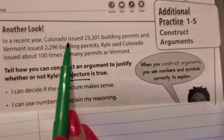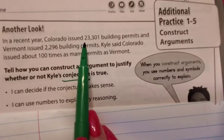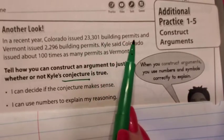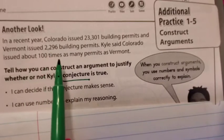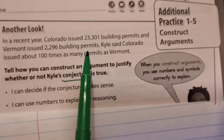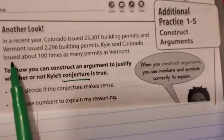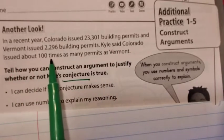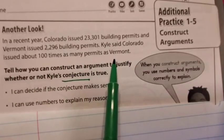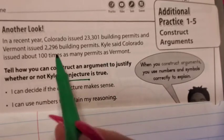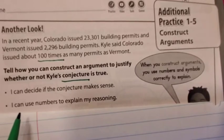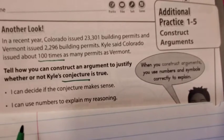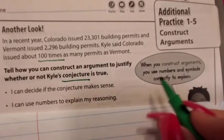In a recent year, Colorado issued 23,301 building permits, and Vermont issued 2,296 building permits. Kyle said Colorado issued about 100 times as many permits as Vermont. 100 times - that is our key word. So we're breaking it down.